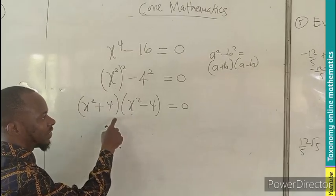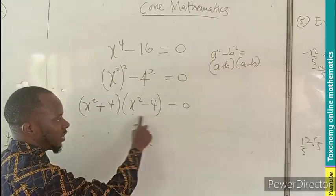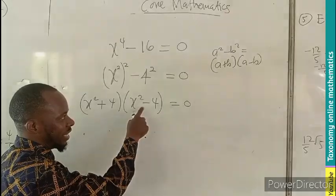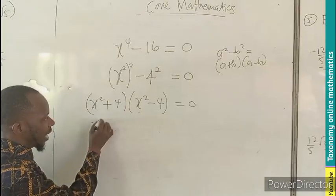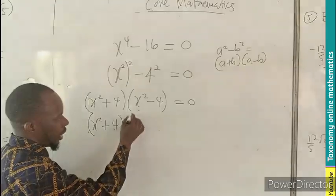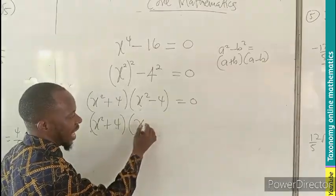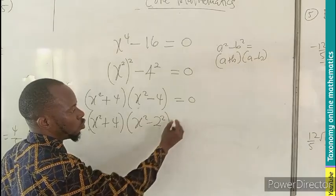We are going to equate this equals 0 or this equals 0. But within this, I can still see a difference of two squared. So let's say x squared plus 4, into bracket x squared minus 4, 2 squared.